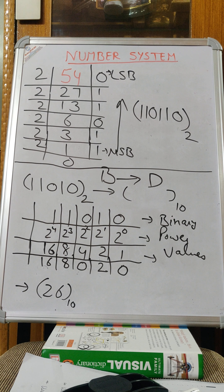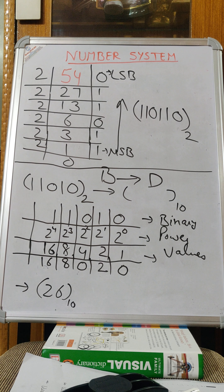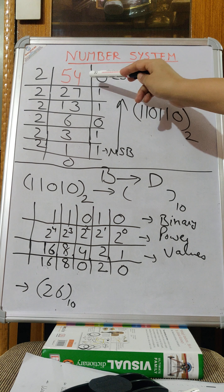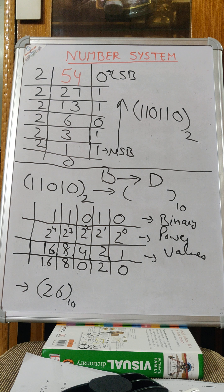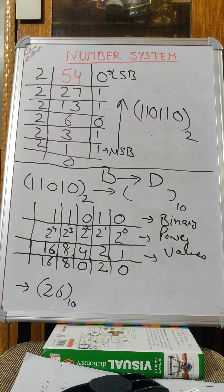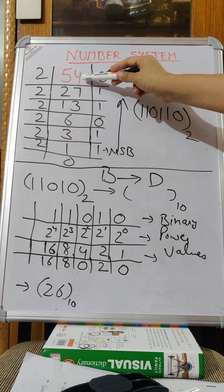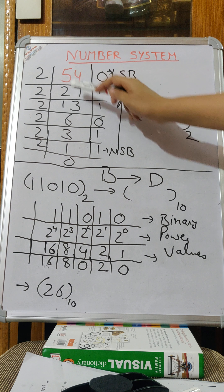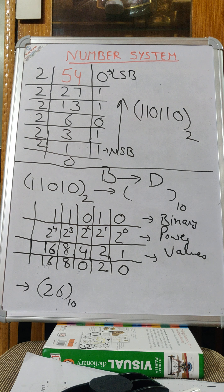Now I am taking another example to show you decimal to binary conversion. Let's take another decimal number, and that is 54. So how will you convert 54 decimal into binary? Again with the same procedure — we will keep on dividing the decimal number by 2 until we get 0 as the dividend at the last.